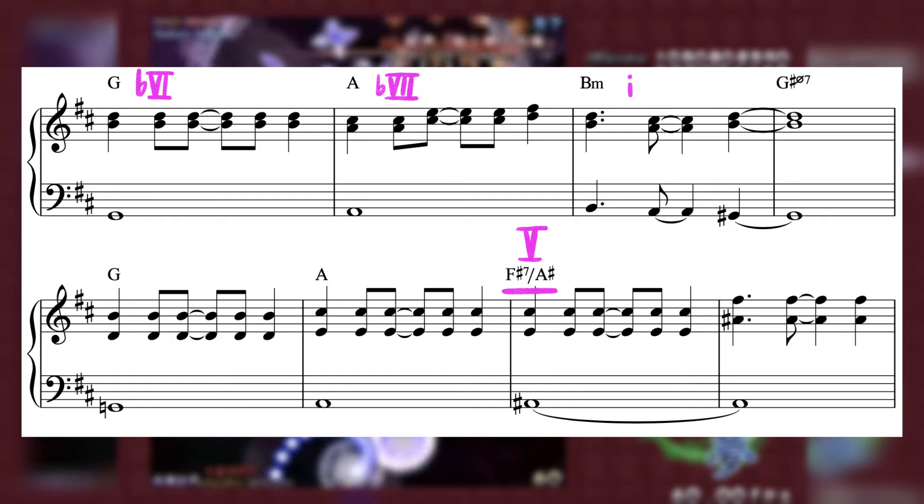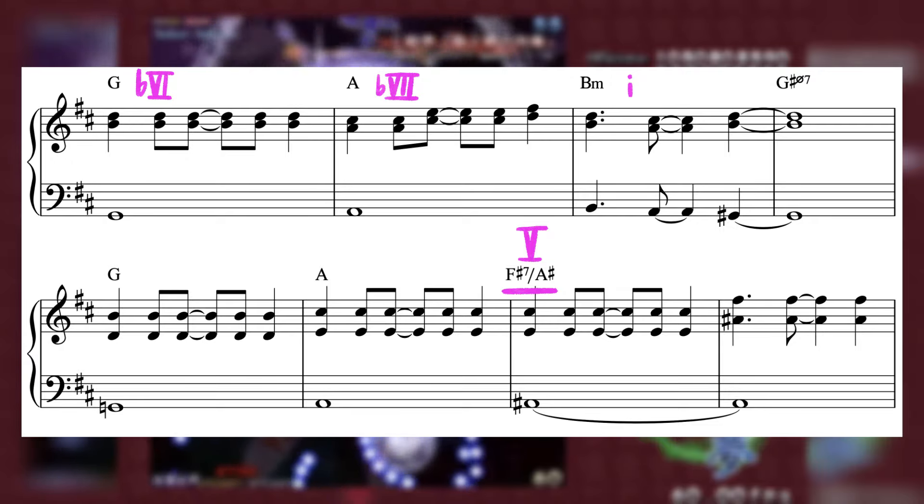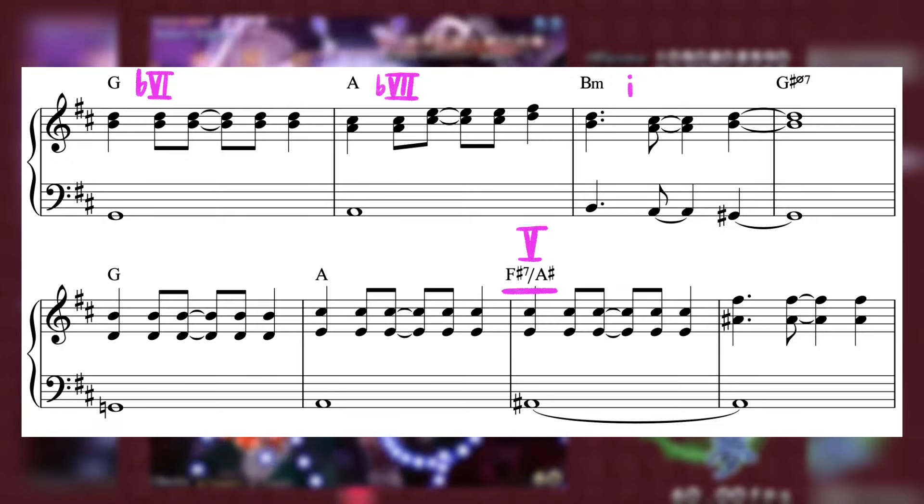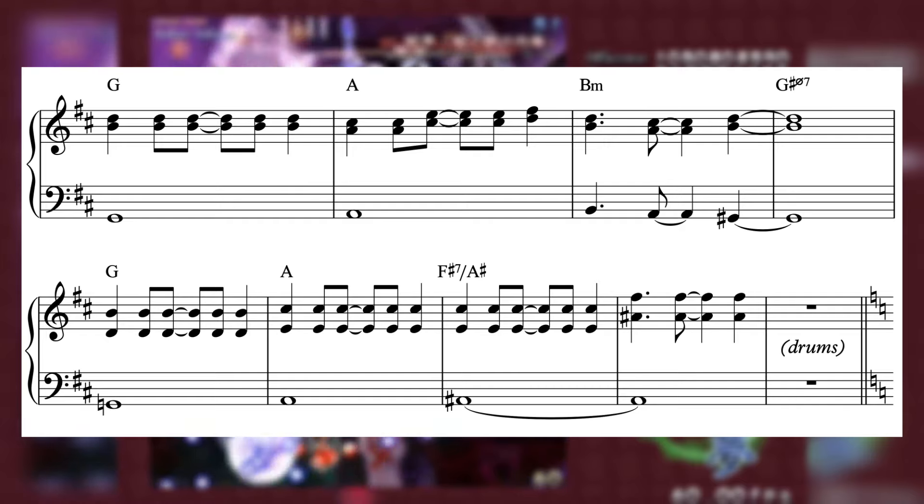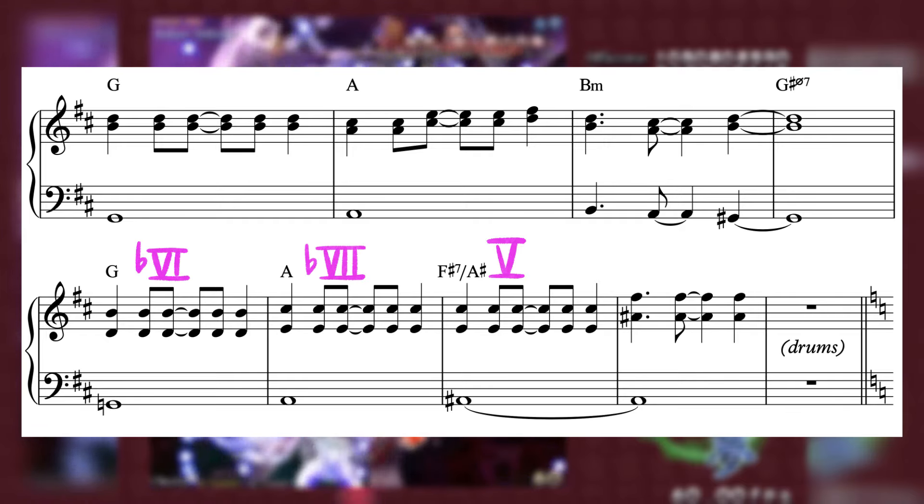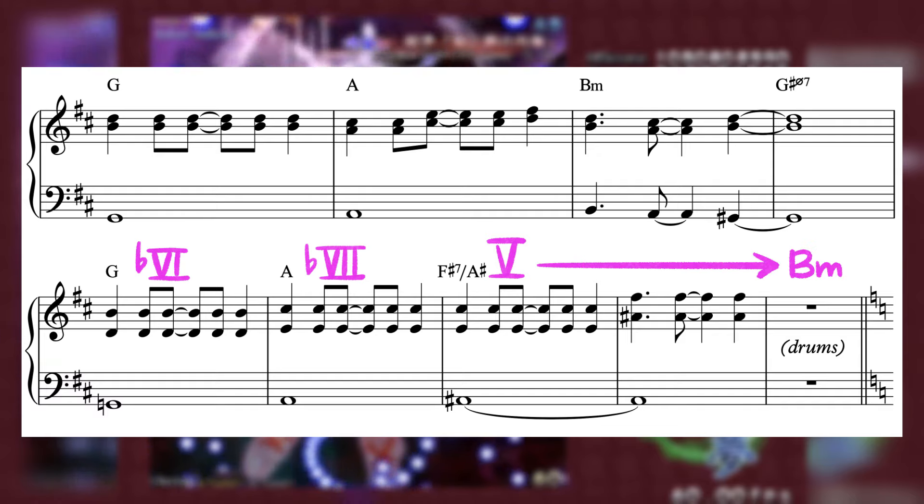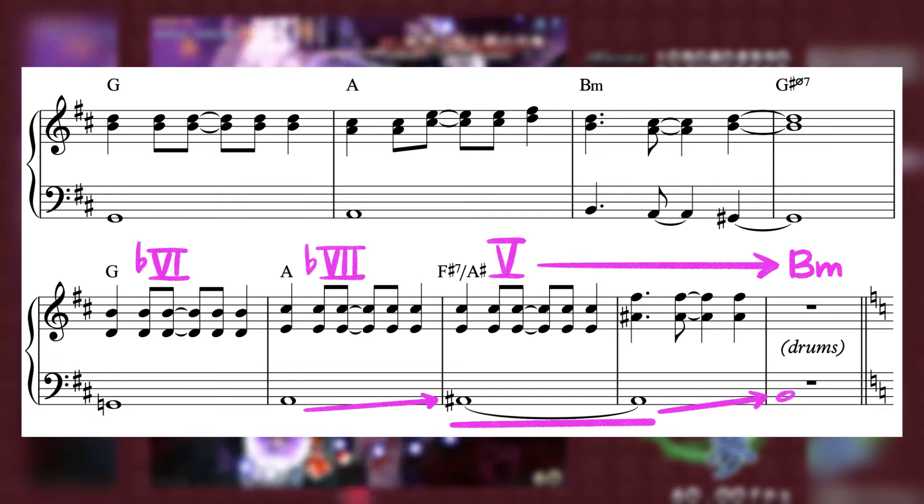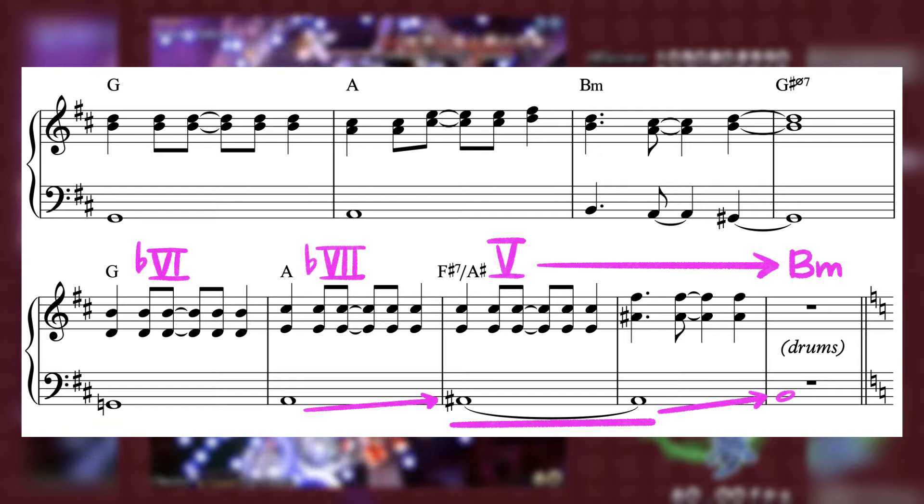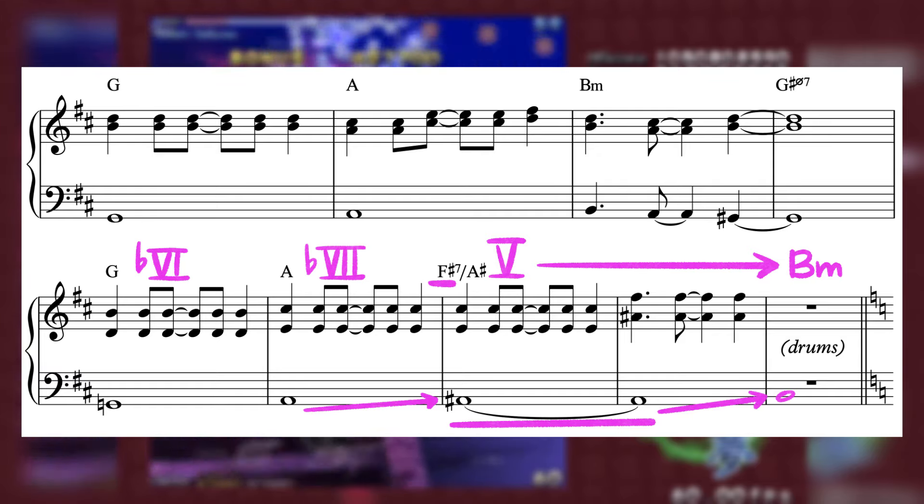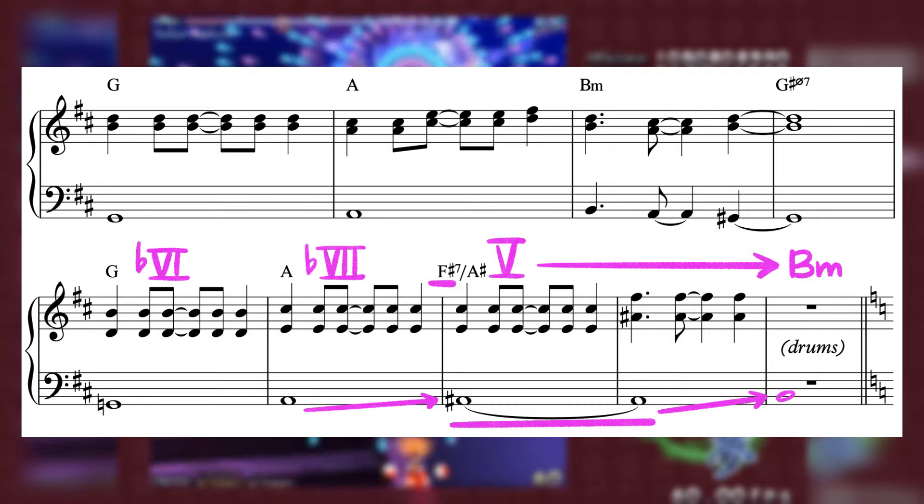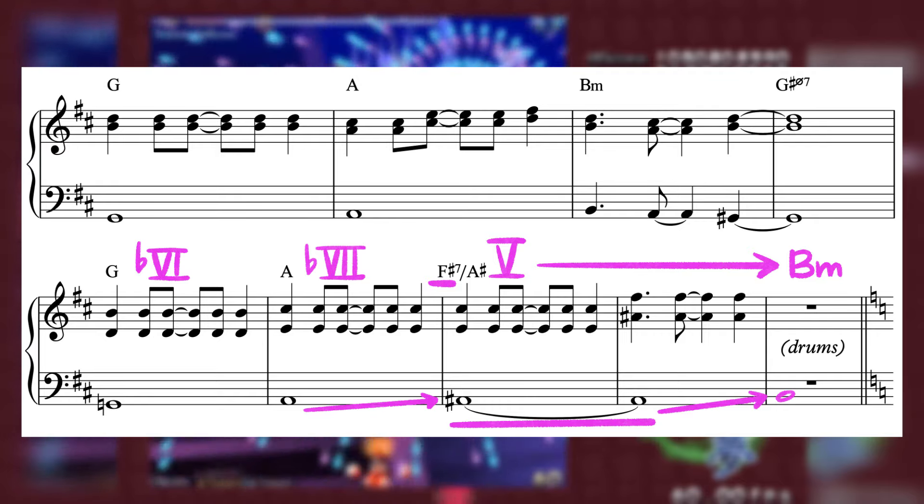This chord is key to a very clever way of changing keys, moving into the following climactic section. The section repeats, ending on this walk up from G to A to F sharp 7 over A sharp, which is just begging for a resolution to our tonic B minor chord. The A sharp in the bass, especially coming up from the previous A, really wants to push up to that B, and the fact that the F sharp chord on top jumped back down to a G the first time around makes that resolution to B minor all the more tantalizing this time.